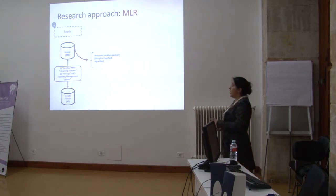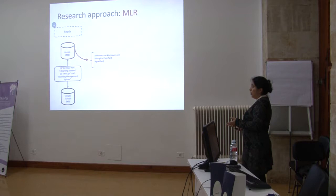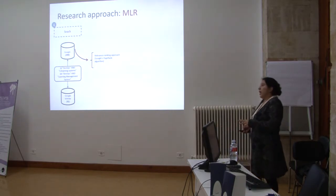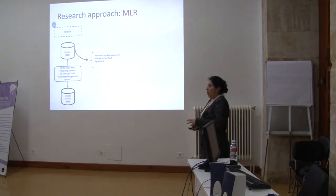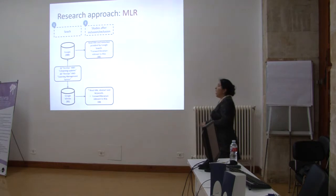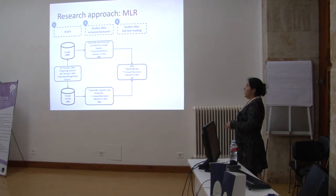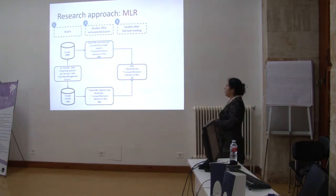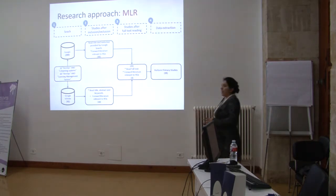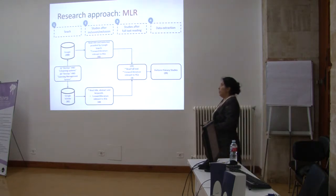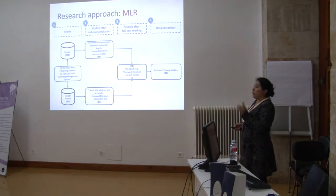This figure shows the general approach of the search. We applied a search in May, which returned 232 papers in Google. In order to limit the number of items, we applied a relevance ranking approach. After that, we applied the inclusion and exclusion criteria, and read the full text. Finally, we obtained 25 primary studies for data extraction. At this point, we applied a test-retest approach in order to check the consistency of the inclusion and exclusion criteria.